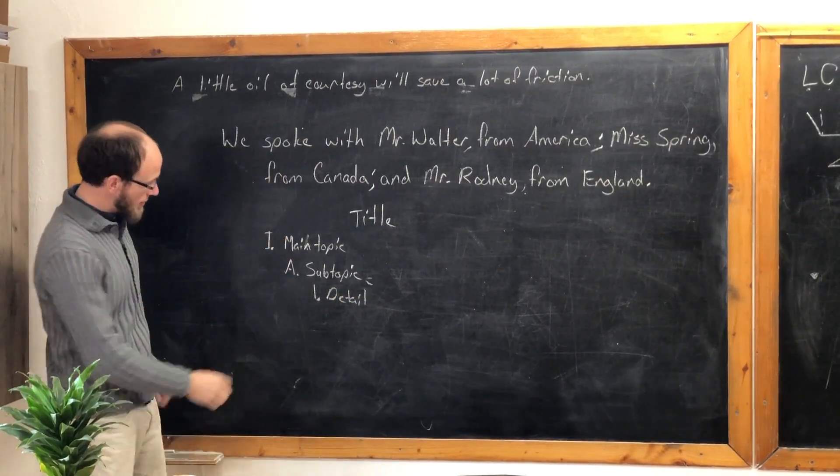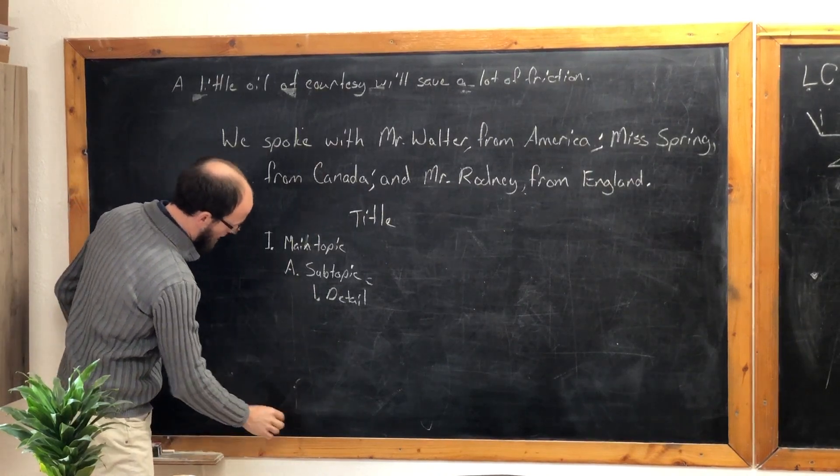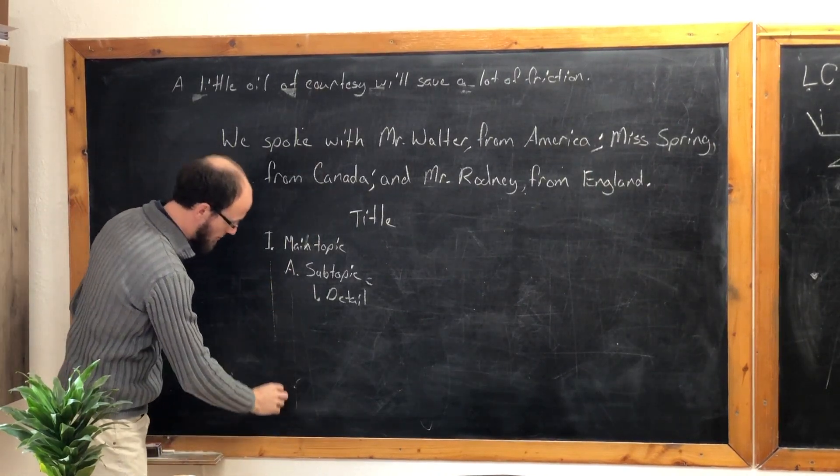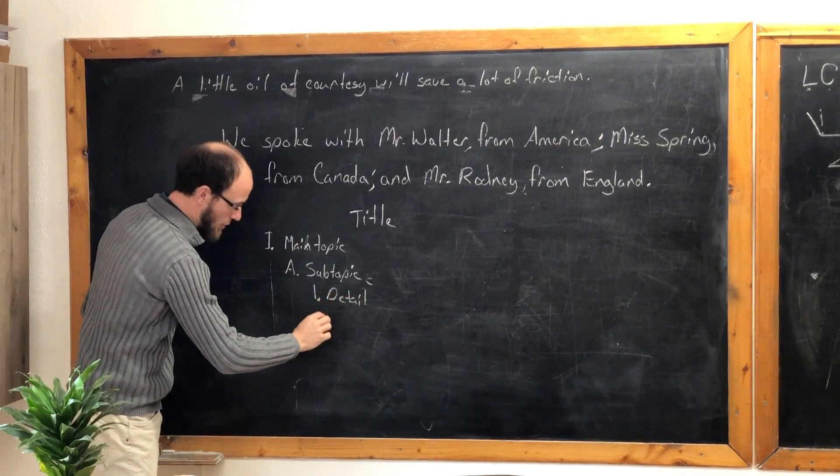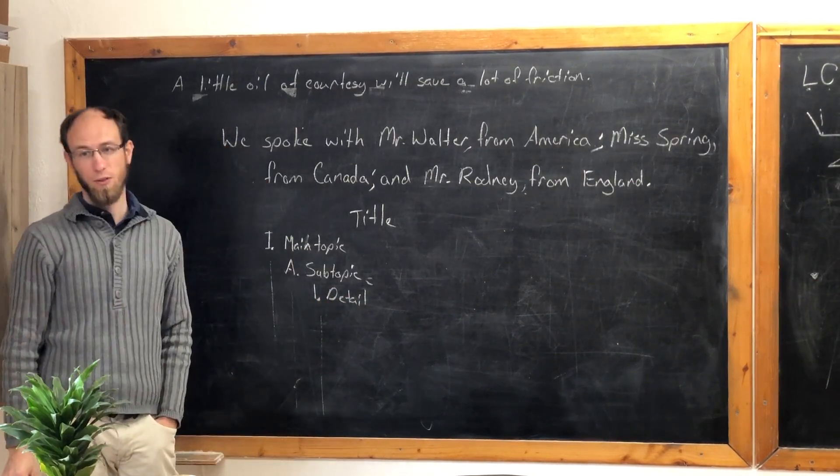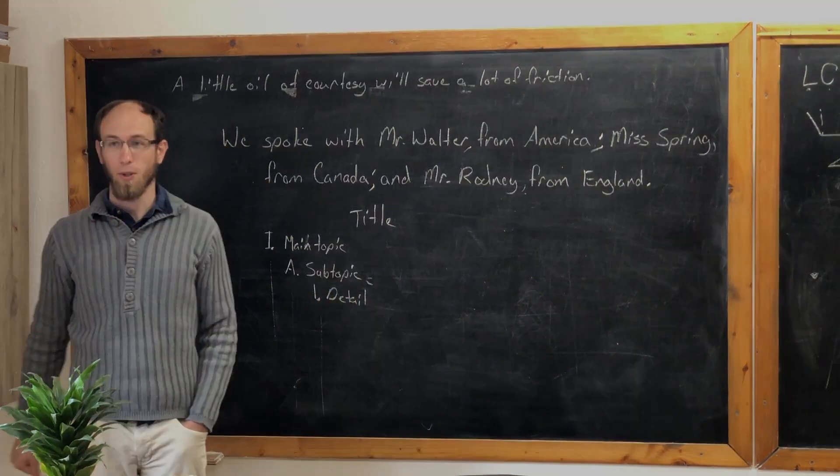Now if you add any B's, they should all be under this line. If you add any more Roman numerals, they should all be directly lined up with this. Any numbers should be directly lined up with this. Carry on with your words.